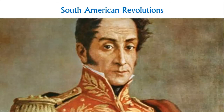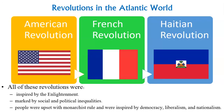It's time to cross the ocean to the South American revolution. The American Revolution caused the French Revolution, which was most certainly one of the causes of the Haitian Revolution. All three were inspired by the Enlightenment, all three were marked by social and political inequalities, and all three had people upset with absolute monarchist rule who were inspired by ideas of democracy, liberalism, and nationalism — those would be their similarities in a Venn diagram.